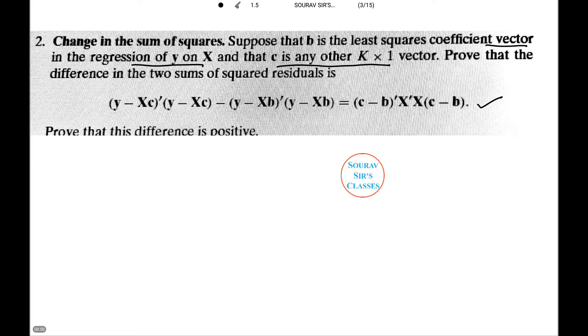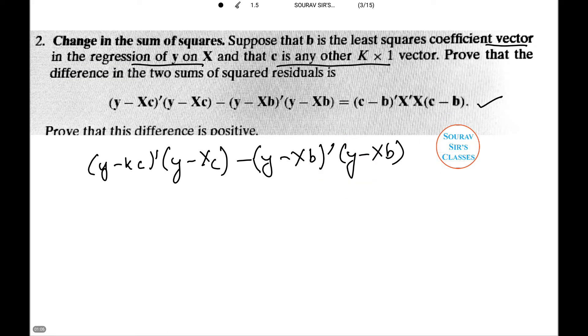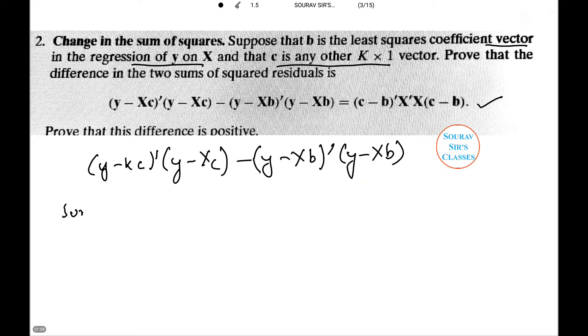y minus Xc whole dash into y minus Xc. I will fast forward it by writing the full equation. Now we write what the sum of squared residuals based on c is. It's nothing but (y - Xc)' (y - Xc). This will be equals to.